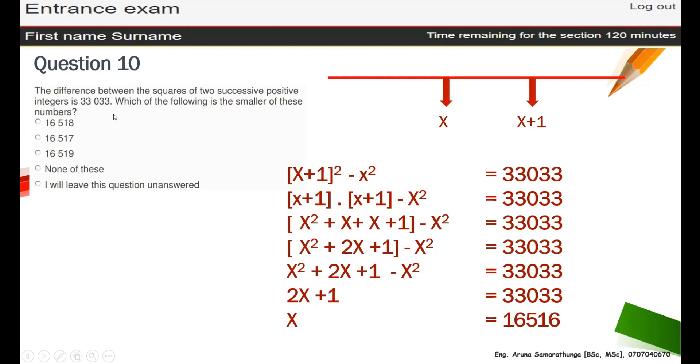This is x. What is the question? Which one of the following is the smaller of these numbers? Smaller is x, actually. Is the answer here? Not here, not here, not here. So none of these is the answer. They are given not the small one, they are given the bigger other one, the 17. This becomes 16516. This is 16516, and this is 16517. So this is the small one.